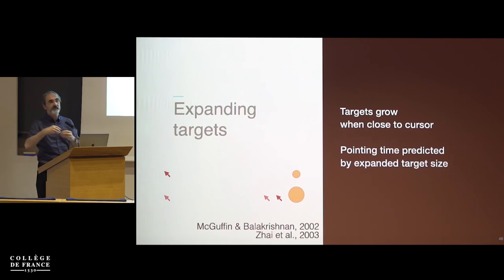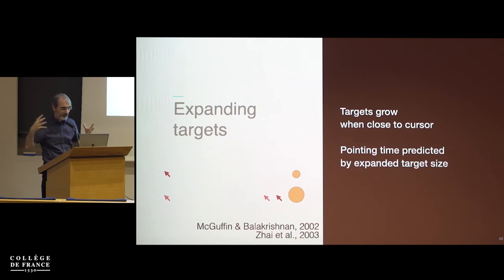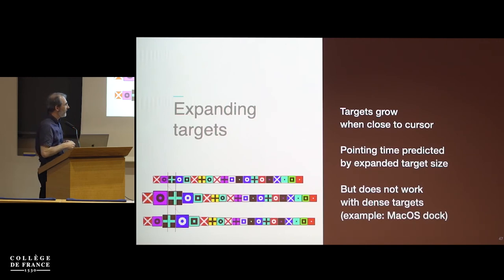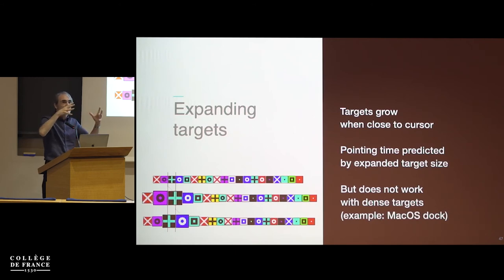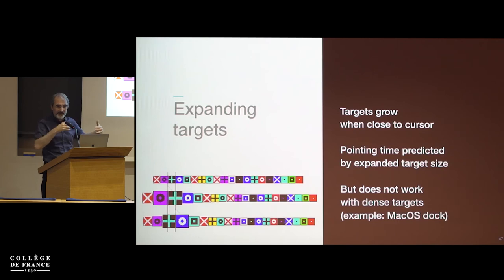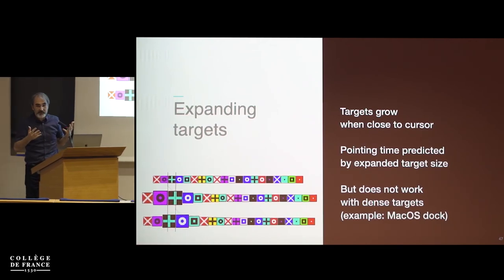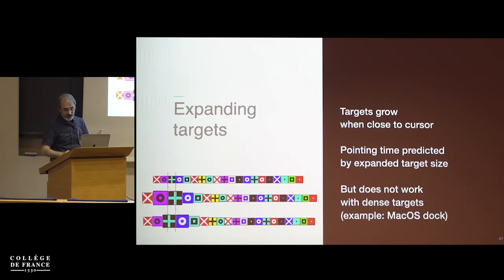Dynaspot by Olivier Chapuis combines a bubble-like cursor that expands modestly — to avoid distraction — with a regular cursor when you slow down, so you can point individual pixels. Another approach expands targets as you approach them, extracting the intention that if you're near a target and slowing down, you probably want it — so why not make it bigger? However, in real settings targets tend to be packed together. The Mac OS dock magnification effect demonstrates this problem: though the icon gets visually bigger, it pushes other icons away, so the effective target size doesn't actually increase. Drag and pop, a clever idea from Patrick Baudisch, brings drop targets closer during a drag, but works only for dragging, not general pointing.